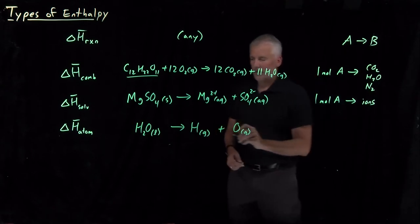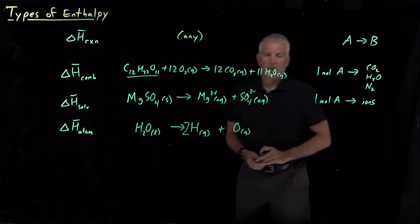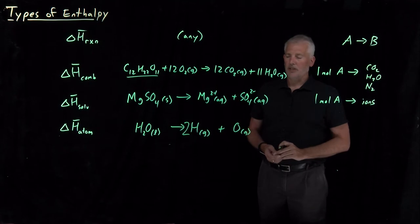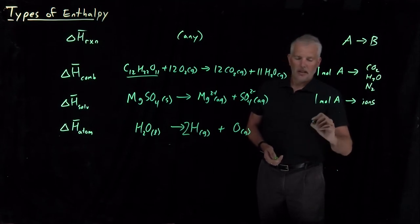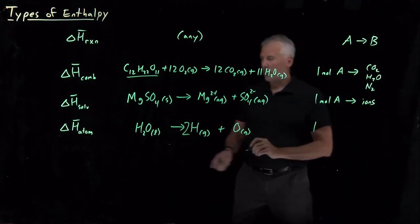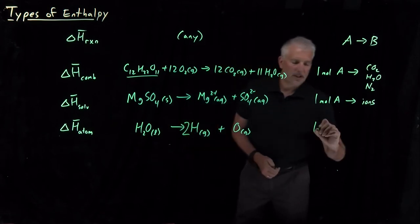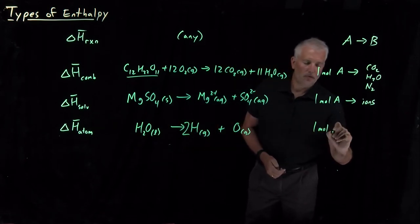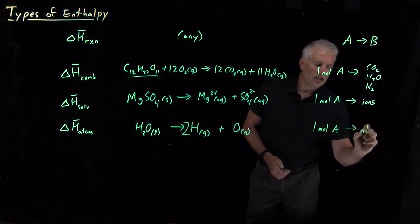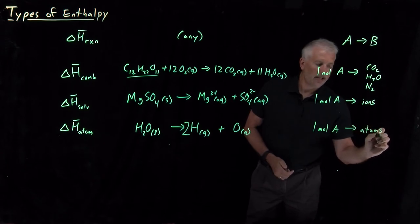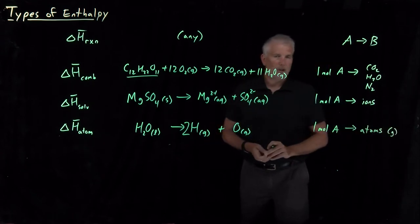I break the molecule down into its constituent atoms. To make that reaction balance, I would need two hydrogen atoms for every one oxygen atom. In general, if I'm talking about a molar enthalpy of atomization, I'm taking one mole of whatever and breaking it all the way down into gaseous atoms, atoms in the gas phase.